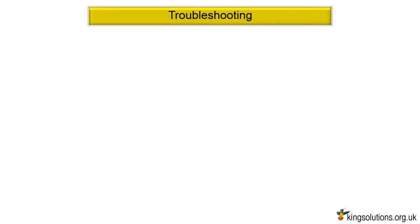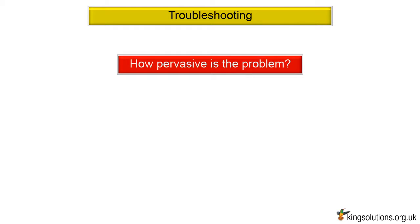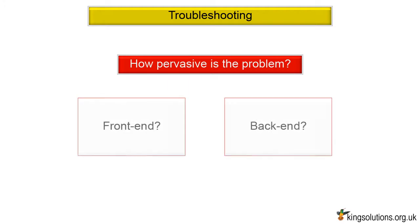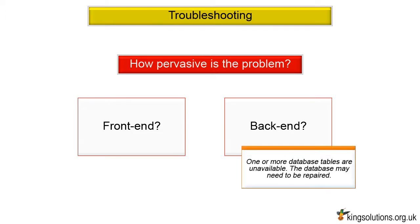Troubleshooting error establishing a database connection in WordPress. How pervasive is the problem? Firstly, is the error establishing a database connection site-wide? That is, are you getting the error on both the front-end and back-end of your site? If you are getting a different error on the back-end, something like 'one or more database tables are unavailable, the database may need to be repaired,' then as stated, you need to repair your database.